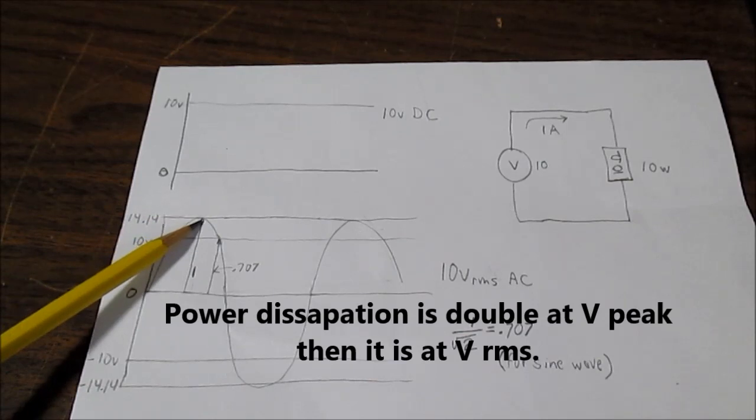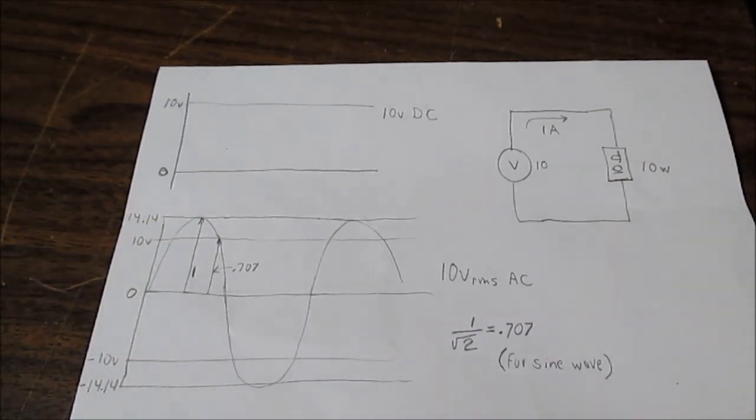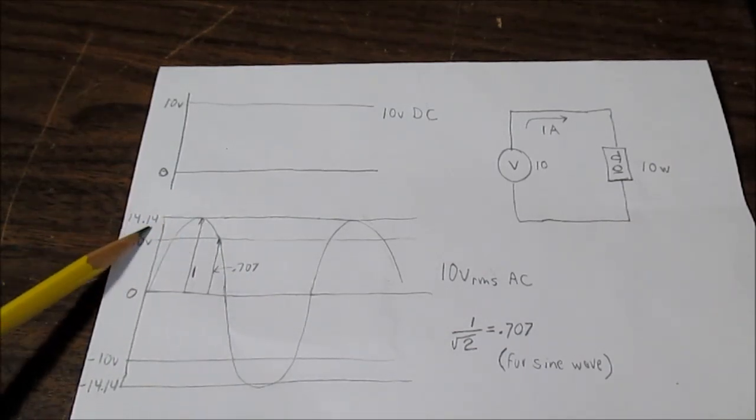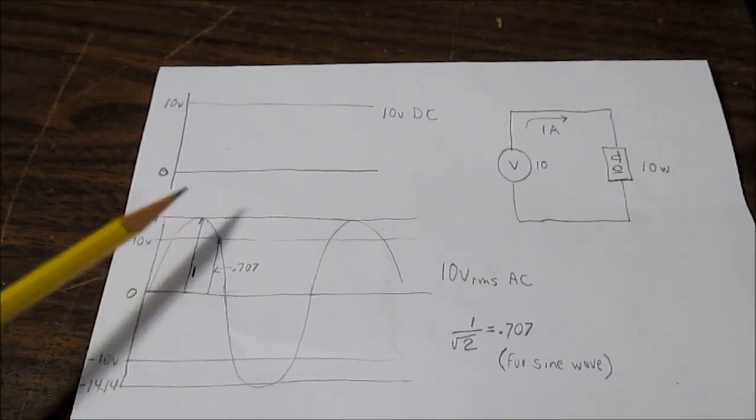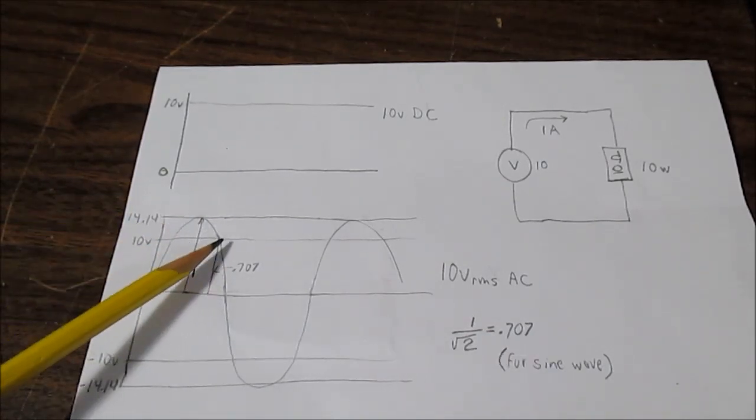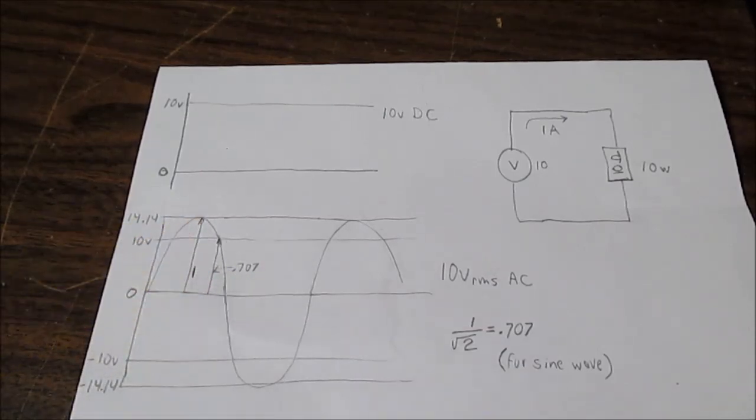Another example is, you know, when they're designing high voltage transmission systems, they have to design the insulators to handle this peak value. You know, be safe with that peak value rather than an RMS value because it's considerably more than the RMS value.